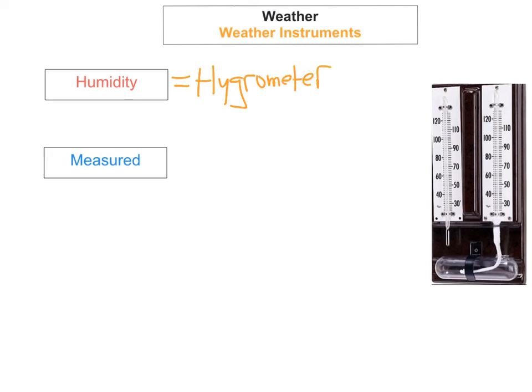The Stevenson screen comes up quite frequently on the junior certificate examination — they often ask what is the name of this box in the short questions. Inside the Stevenson screen you will find thermometers and barometers.